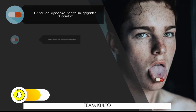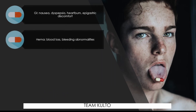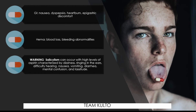Adverse effects of aspirin: GI problems including nausea, dyspepsia, heartburn, and epigastric discomfort. Blood effects include blood loss and bleeding abnormalities. An important warning sign is salicylism, which can occur with high levels of aspirin. It is characterized by dizziness, ringing in the ears, difficulty hearing, nausea, vomiting, diarrhea, mental confusion, and lassitude. If a patient is on aspirin therapy, observe for these signs and report to the physician.